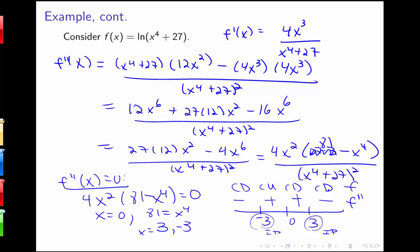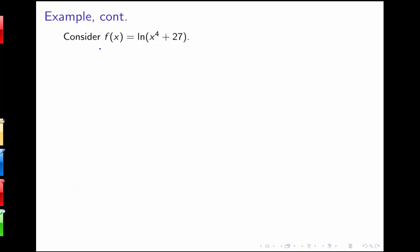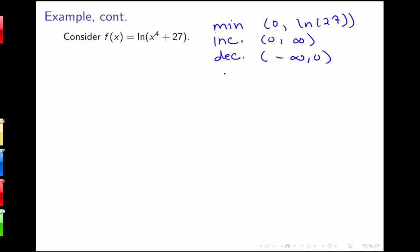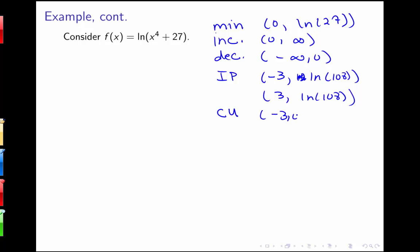To summarize all this information: we have a minimum at (0, log 27); f is increasing on 0 to infinity and decreasing on negative infinity to 0. We have inflection points at negative 3 — plugging in gives log of 108, since 81 plus 27 equals 108 — and at 3, also log of 108. The function is concave up from negative 3 to 3, and concave down from negative infinity to negative 3 as well as from 3 to infinity.